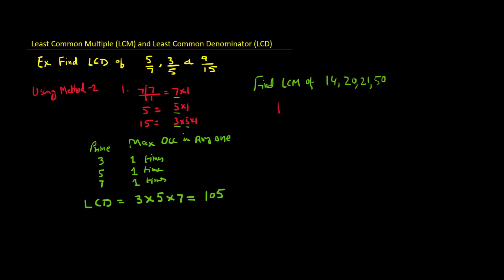The prime factors of 14: if you're not comfortable with this, there is a video for prime factors. The minimum number divisible by 14 is 2, giving 7. Then the minimum divisor of 7 is 7, giving 1. When we get 1 we stop and multiply: so 14 equals 2 × 7.